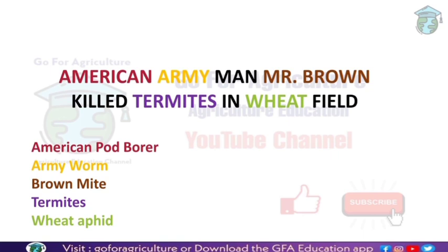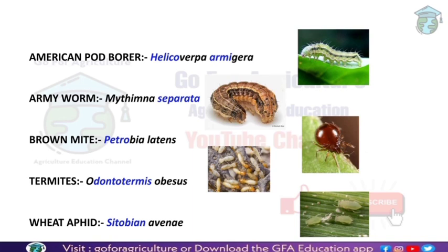Now we are going to learn the scientific names. These five insect pests have different scientific names. American Pod Borer's scientific name is Helicoverpa armigera - you must have heard this name very frequently if you are a BSc student. Army Worm is Mythimna separata. Brown Mite is Petrobia latens. Termites is Odontotermes obesus.